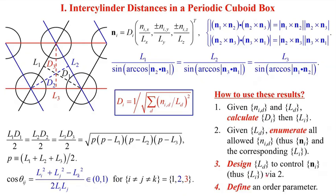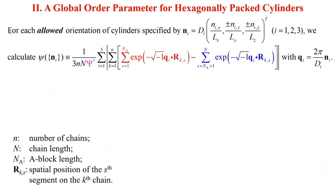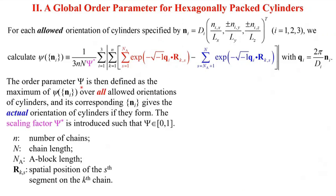We can also define a global order parameter for hexagonally packed cylinders formed by diblock polymers, which is needed for studying their phase transitions in simulations. For each allowed orientation of cylinders specified by the three N_i's in the box, we calculate the small psi, where the wave vector q_i is directly proportional to N_i, small n is the number of diblock polymer chains contained in the box, capital N is the chain length, N_A is the number of A segments on each chain, and R_k is the spatial position of the s segment on the k-th chain. The order parameter capital Psi is then defined as the maximum of small psi over all allowed orientations of cylinders, and its corresponding N_i then gives the actual orientation of cylinders if they form.